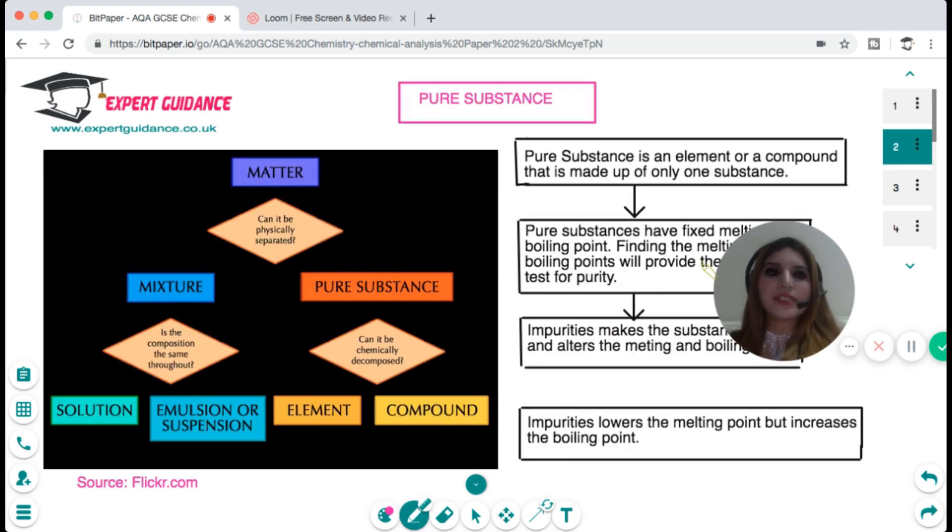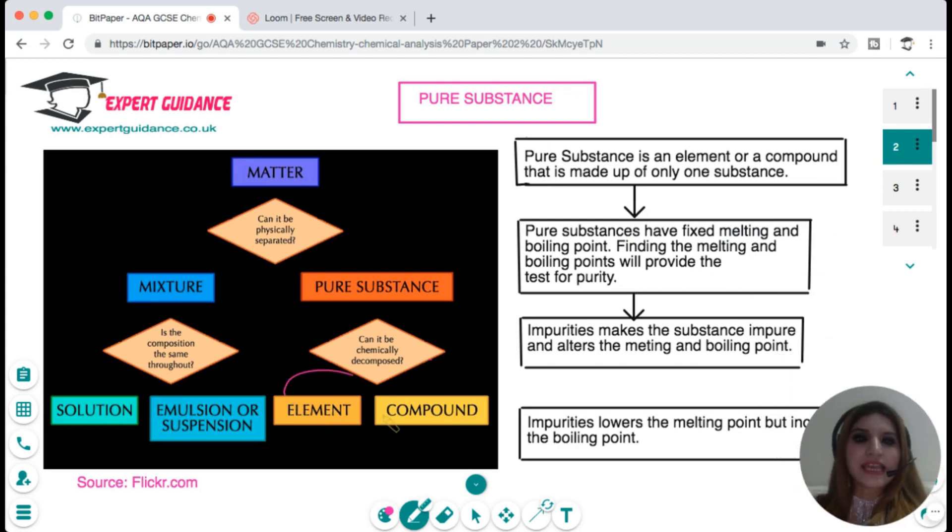Now what is a pure substance? A pure substance is an element or a compound that is made up of only one substance. How do you distinguish a pure substance from any other substance? Pure substances will have a fixed melting and boiling point, and finding the melting and boiling point will provide the test for purity.